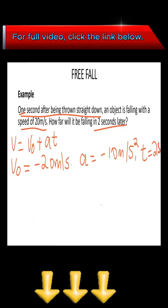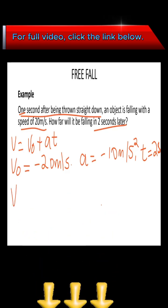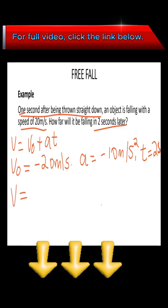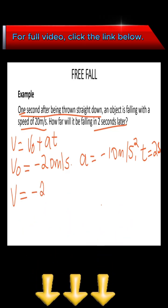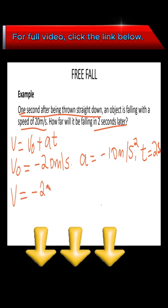So now for us to find v, the v will be negative 20 plus negative 10 times 2.